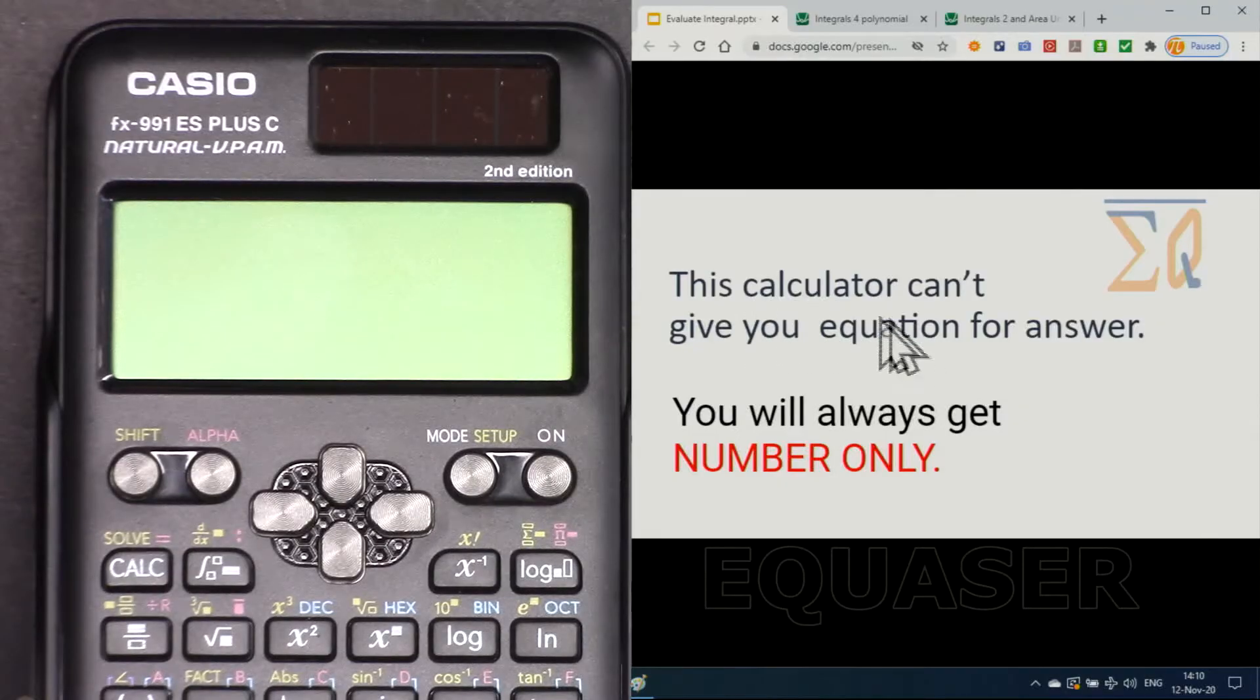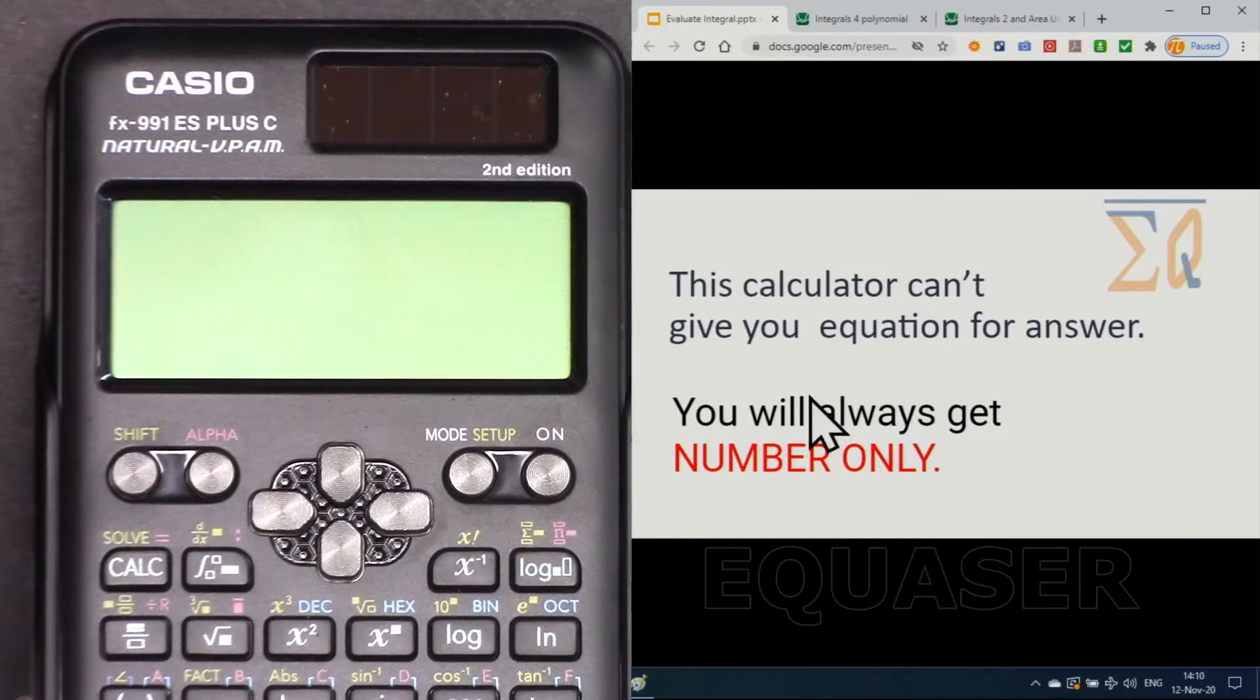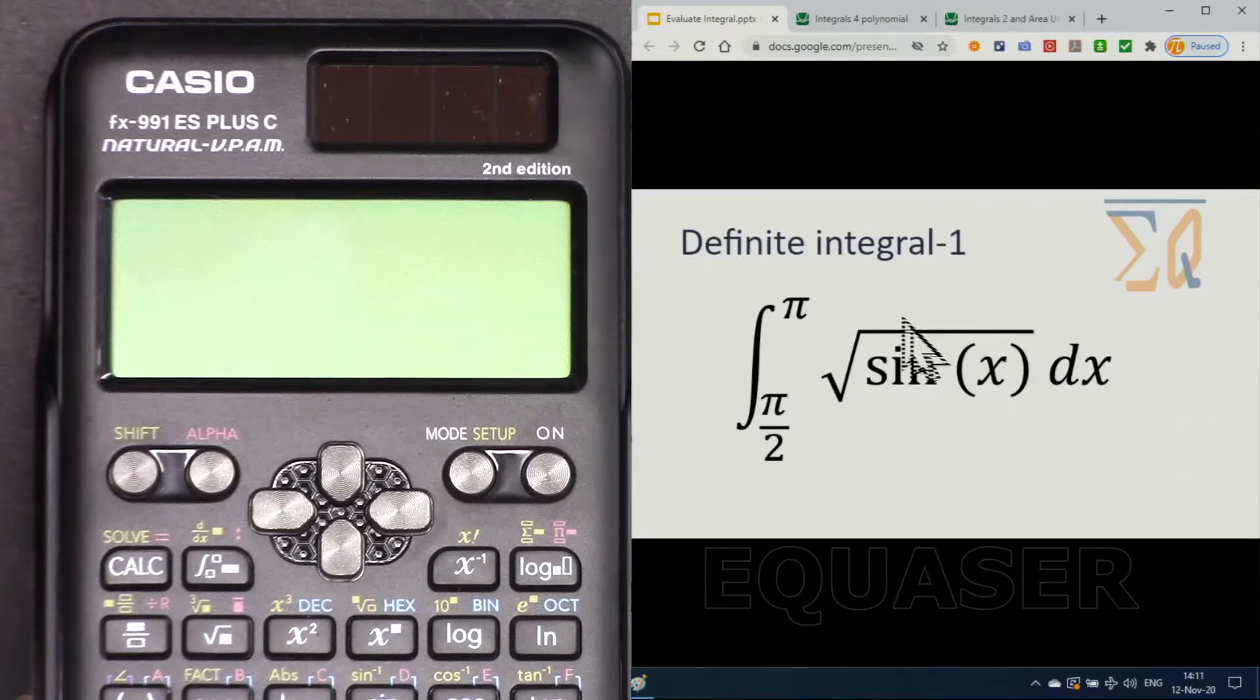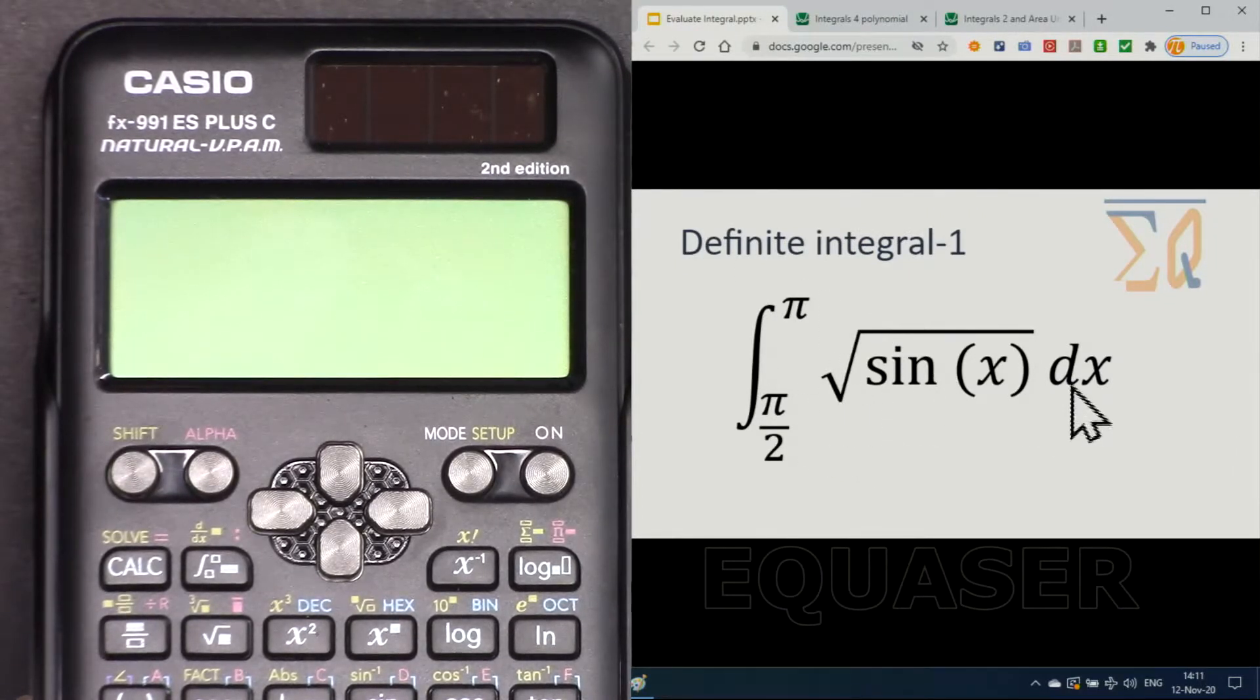To let you know, this calculator can't give you an equation answer, so the answer that you are getting will be only a number. Let's see if we have a definite integral: square root of sine x dx from pi over 2 to pi.